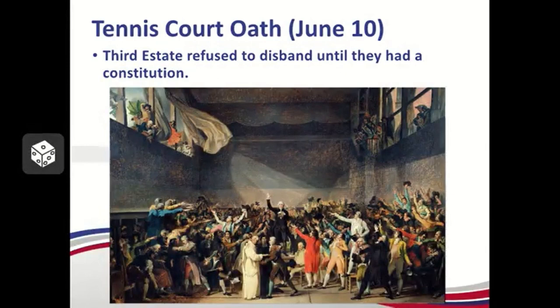However, the meeting got off to a rocky start. Since it had been 175 years, nobody really knew how to run a meeting of the Estates General. A controversy quickly arose about how voting would work. In the last meeting, they voted by estate — each estate had one vote — which was problematic because the first and second estates could always outvote the third estate, despite the third representing 95% of the population. The third estate proposed voting by head count, where each individual delegate gets a vote, giving the 600 third-estate delegates an advantage over the 300 each from the first and second estates.